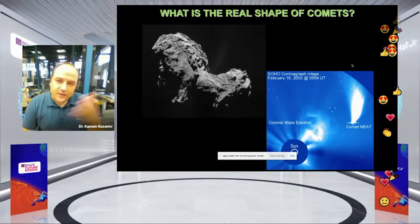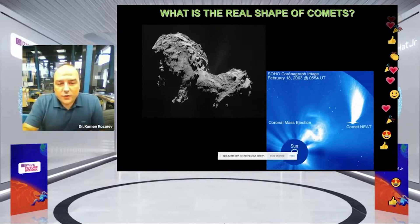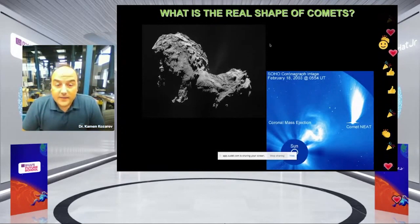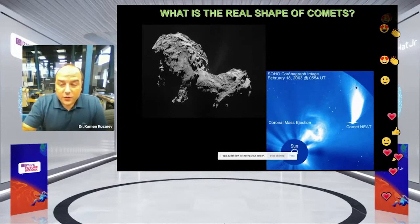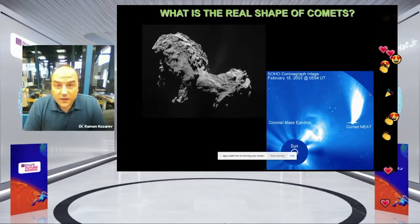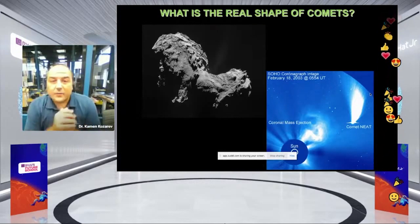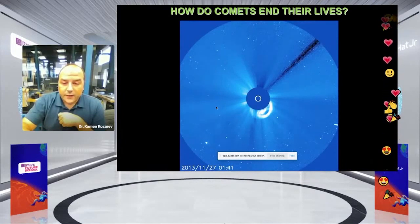Did they spread life? There are all these exciting questions. This image on the left shows you what a real comet — or let's say the nucleus of a real comet — looks like from very, very close up. And this image on the right shows you what a comet looks like when it dives very close to the Sun, attracted by its gravity.